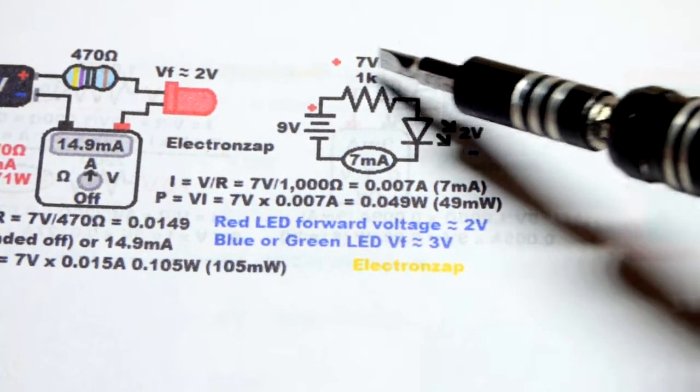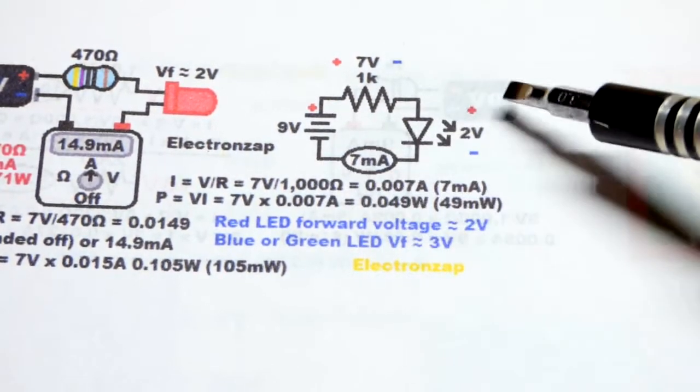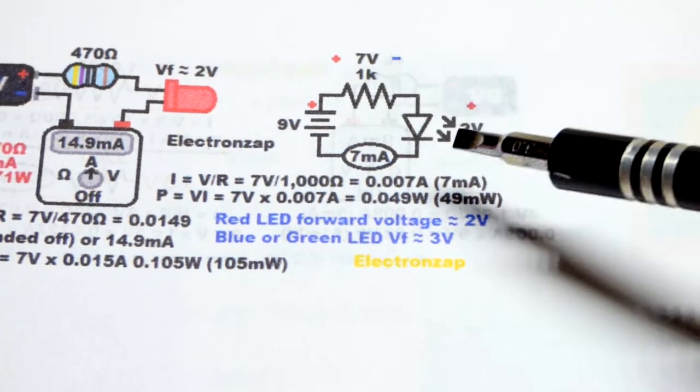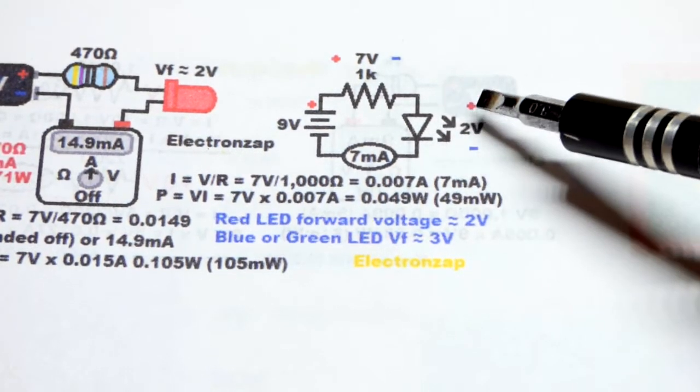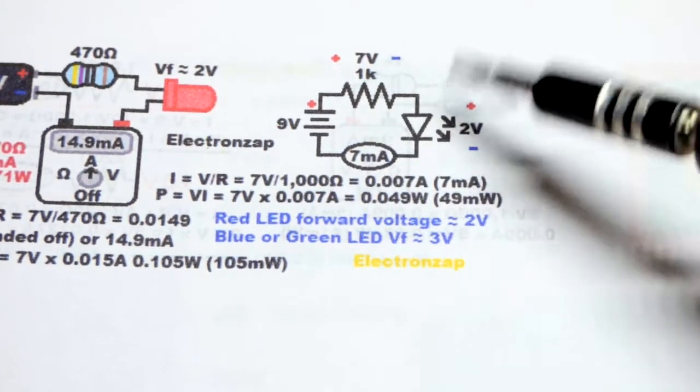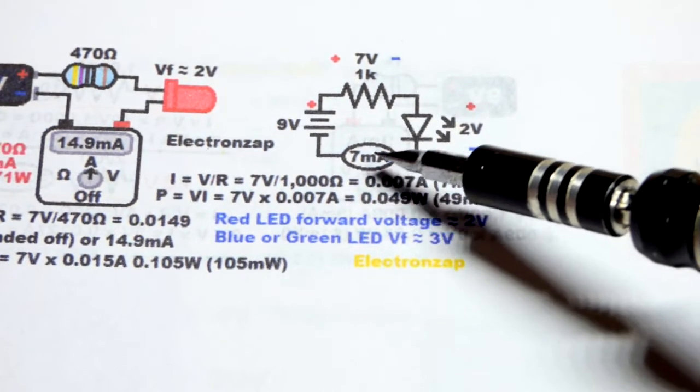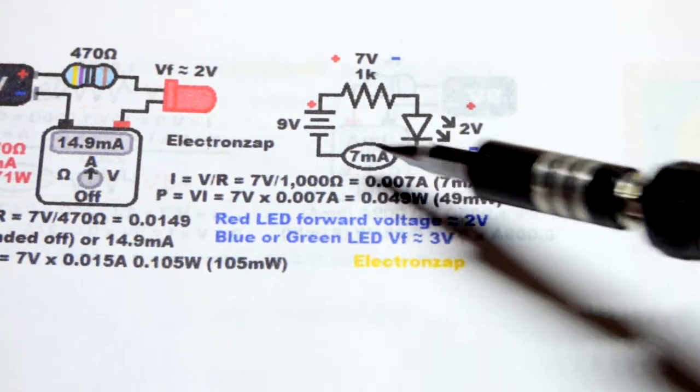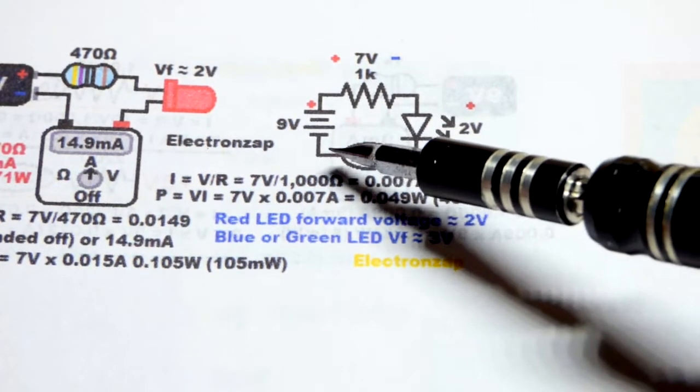We got the resistor schematic symbol. I used 1k instead of 1000 ohms, a different value resistor. Then we got a red LED with about two volts across it. When it comes to the current, sometimes you'll see the current written out and then have it circled or ovaled like this. That indicates it's going into the meter and out of the meter.